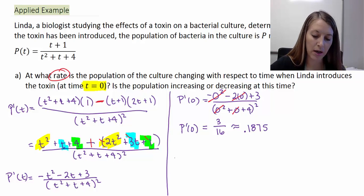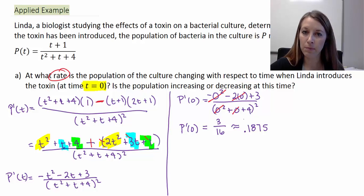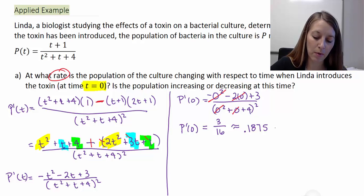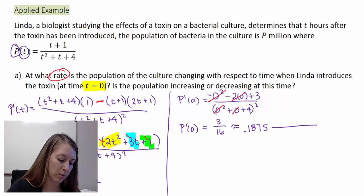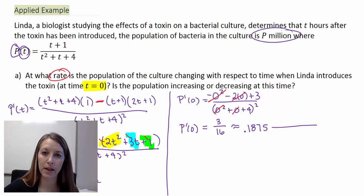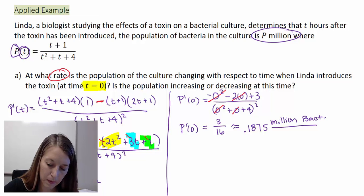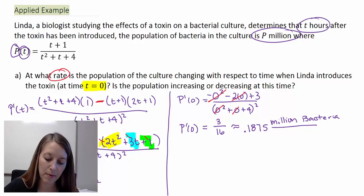So the rate at our initial time or when the bacteria is introduced is given by this number here. But we have to know what that really means, meaning what's our label. So this is a rate. So our label has to be something per something. It's always our function per our variable. So in this case, our function is given by the population in millions. So this is million bacteria. And then the per is always our variable. So in this case, T stands for time. And time is in hours. So our rate at the initial time frame is 0.1875 million bacteria per hour.